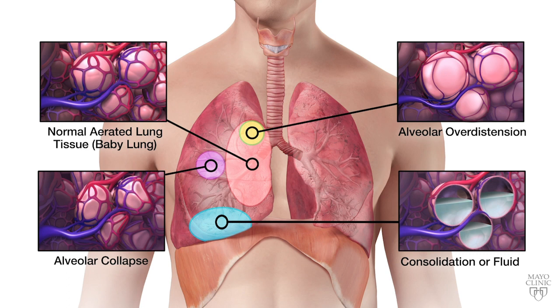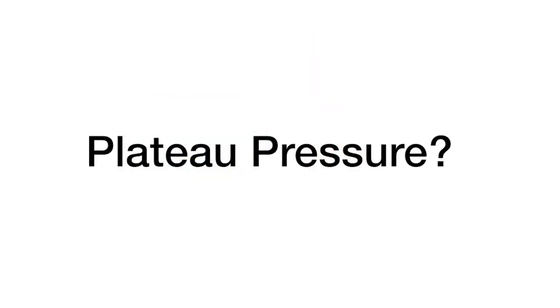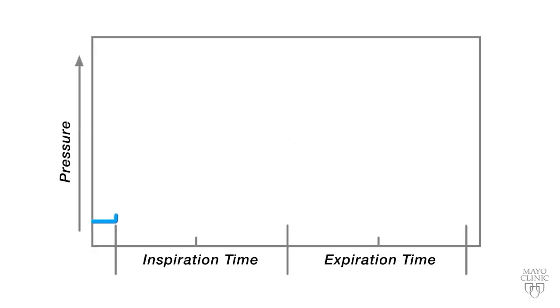The problem here is obvious: predicted body weight tracks well with the healthy lung. However, it has no relation to the size of an individual patient's baby lung, because every pneumonia, every aspiration, every inflammatory lung disease process, and everybody's lung size is different. Can we use plateau pressure as a guide to decide how much tidal volume to give a patient? Certainly, but not quite — let's make sure we understand why.